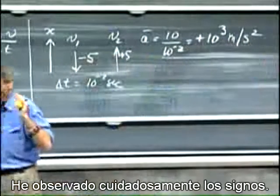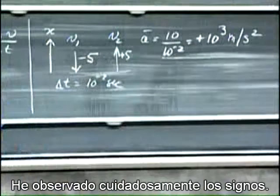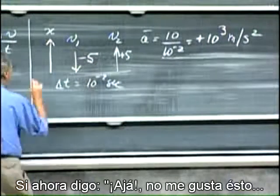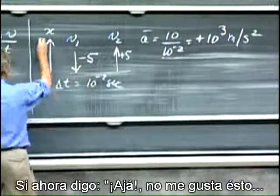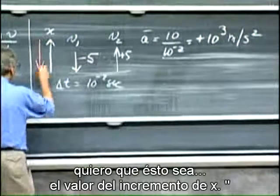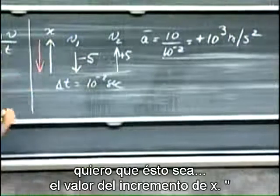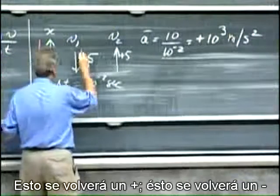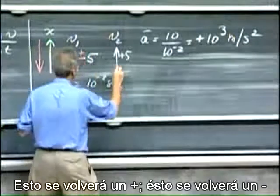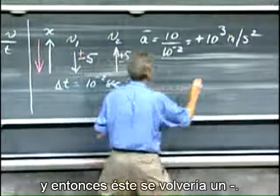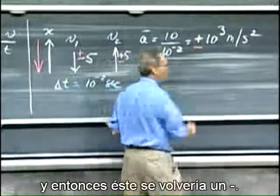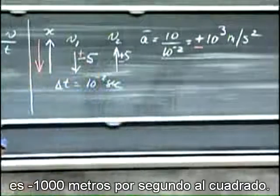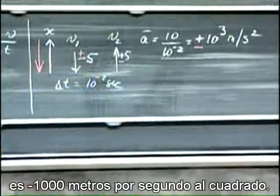I have observed carefully the signs. If I now decide I want to call downward the direction of increasing x — no big deal — the signs flip: the impact velocity becomes plus, the rebound becomes minus, and the acceleration becomes minus 1,000 meters per second squared.